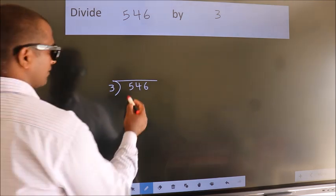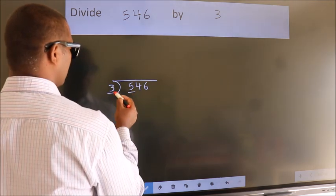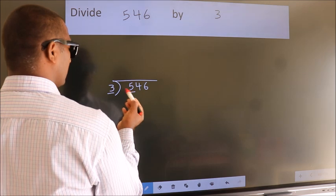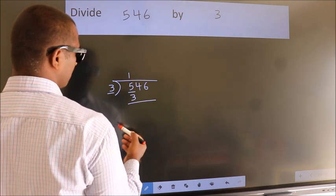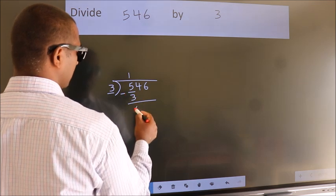Next, here we have 5, here 3. A number close to 5 in the 3 table is 3 times 1 equals 3. Now, we should subtract. We get 2.